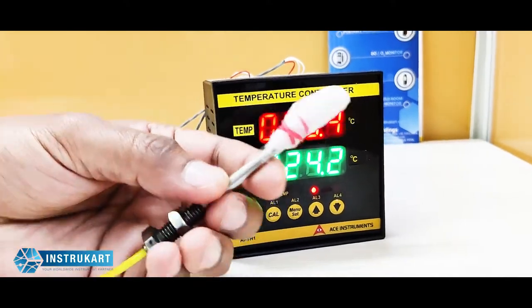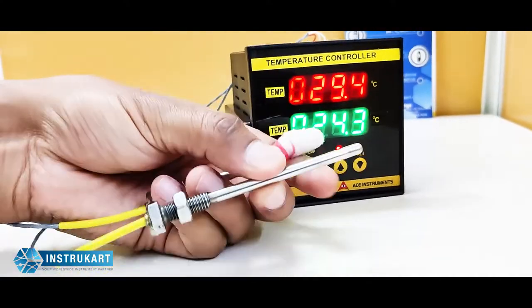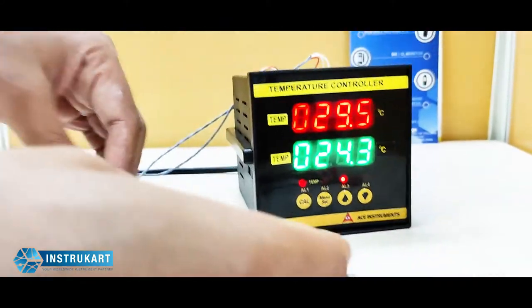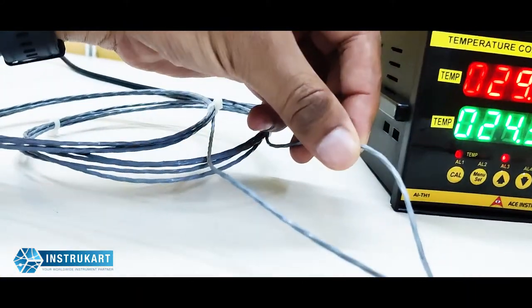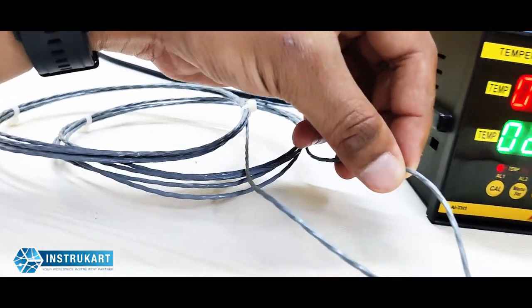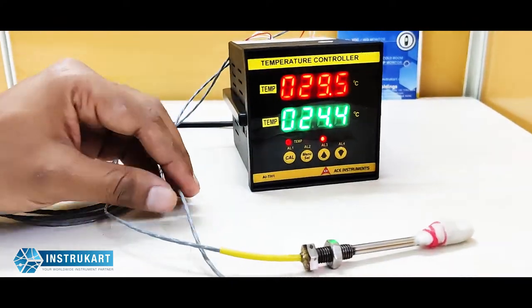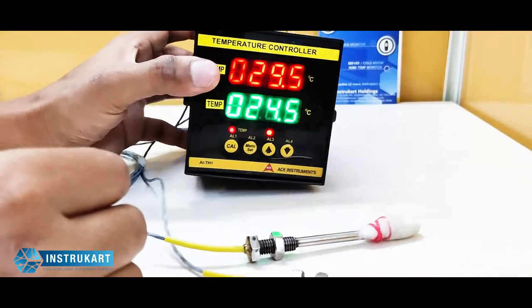These RTD sensors, as you can see, are stainless steel RTD sensors along with a Teflon coated wire which is provided, and the body is ABS body.